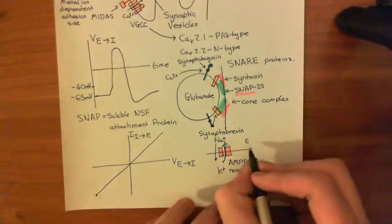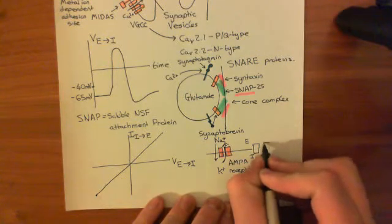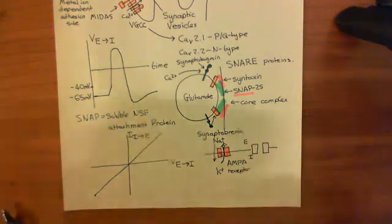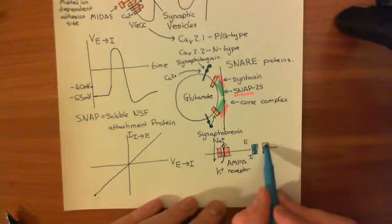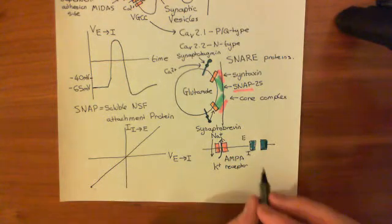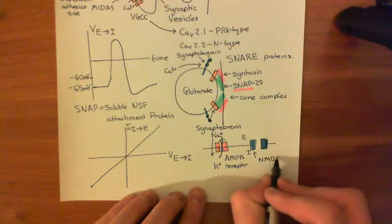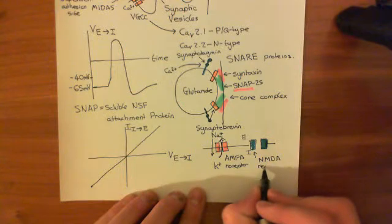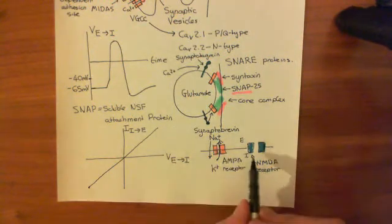For NMDA, it happens the same way at positive electrical potentials. The first complication of NMDA receptors is that they have a co-agonist requirement: they need either two glycine molecules or two d-serine molecules, because two of the subunits — the GLU-N1 subunits — have ligand binding domains that bind serine or glycine rather than glutamate. But suppose we have the agonists right and the receptor is open; if we do the same experiment as for AMPA, we get the same result, because it's still permeable to sodium and potassium.